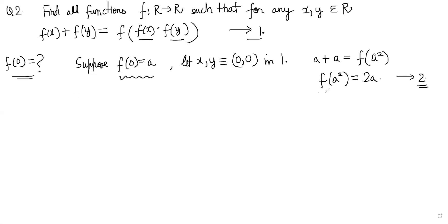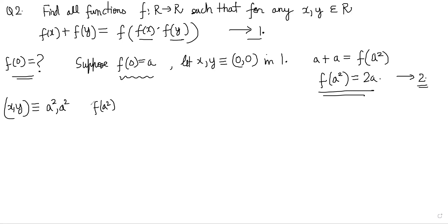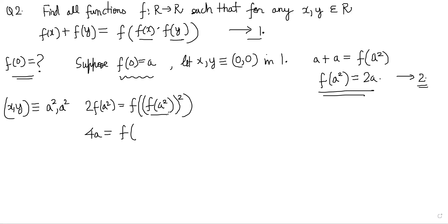Now we have information about f(a²), so let's use it. Put x = y = a² in equation 1. We get 2·f(a²) = f(f(a²)²). Since f(a²) = 2a, this becomes 4a = f((2a)²) = f(4a²). So our third result is f(4a²) = 4a.